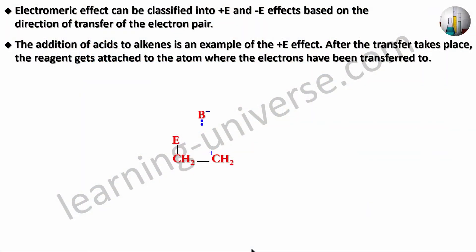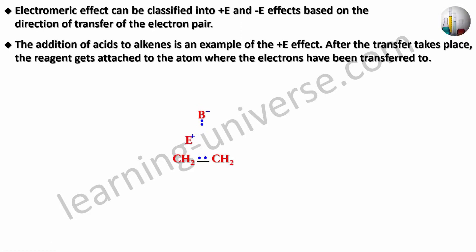So two neutral molecules are able to react like this. To recap: the pi electrons and the B–E bond electrons interact; BE comes closer, electrons go to B, E becomes plus, E plus comes toward carbon, carbon pulls the pi electrons, forms a bond, carbon becomes plus, attracts B minus, forms a bond, both lose their charge, and the reaction is complete. That was the plus E effect.